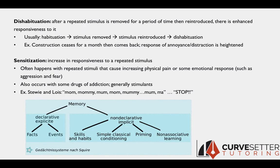Dishabituation is sort of like the undoing of habituation. After a repeated stimulus is removed for a period of time and then reintroduced, there's an enhanced responsiveness to it. Habituation occurs, then that ongoing stimulus is removed, there's a pause period of time, then the stimulus is reintroduced, and there's a heightened responsiveness — that's dishabituation. Continuing with our construction example: the construction ceases for a month, then comes back, and your response of annoyance and distraction is extremely heightened above what it was before.